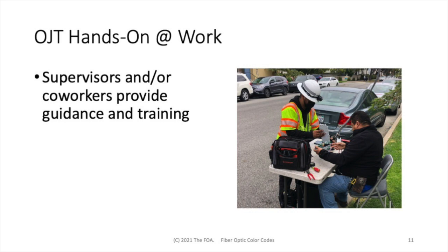A big part of OJT is the hands-on training that the employee gets at work. Supervisors and coworkers provide guidance and training, helping them learn processes like cable prep and splicing. The basic skills lab can help them learn these processes correctly. By knowing what they'll be doing on the job and completing the relevant parts of the basic skills lab, they can be better prepared when they go out in the field and learn much more rapidly from doing.